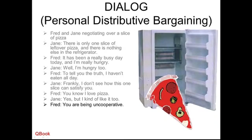And Fred says: you are being uncooperative. Here we go with the same idea from last unit — one side telling the other side they're not working together, they're not trying to find a solution, they're trying to stop the negotiation. And Jane says: you are being inflexible. Inflexible means you don't want to change. Of course, if we negotiate, both sides have to change something — otherwise, we'll never come to a conclusion.